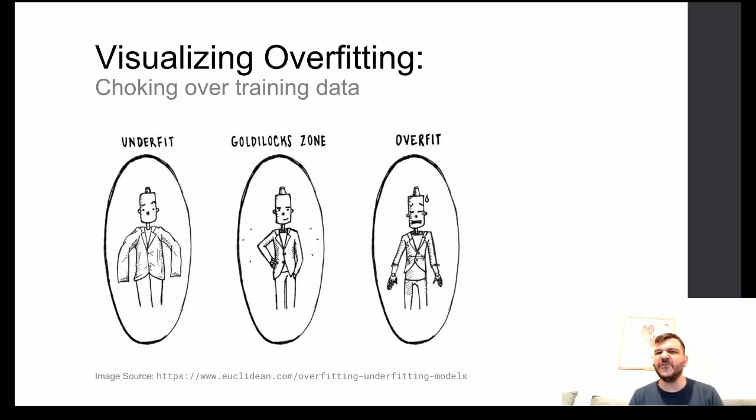Overfitting could be visualized as the choking over the training data, allowing no mistakes on that training data, but also making you unable to generalize to data that has not been seen before. As stated in the previous slide, this is the analogy of memorizing over learning.